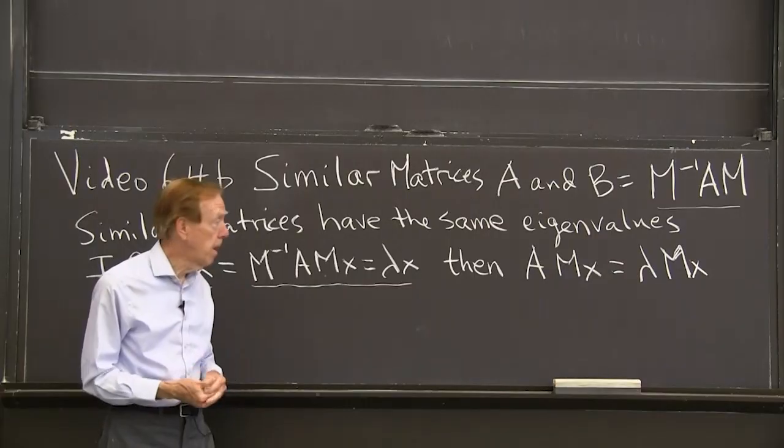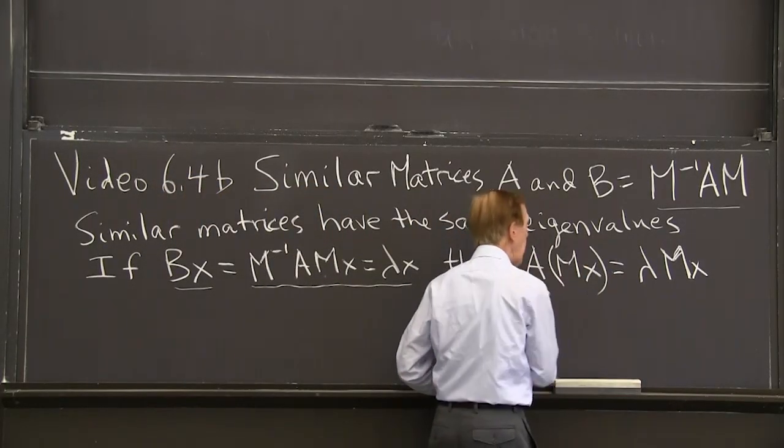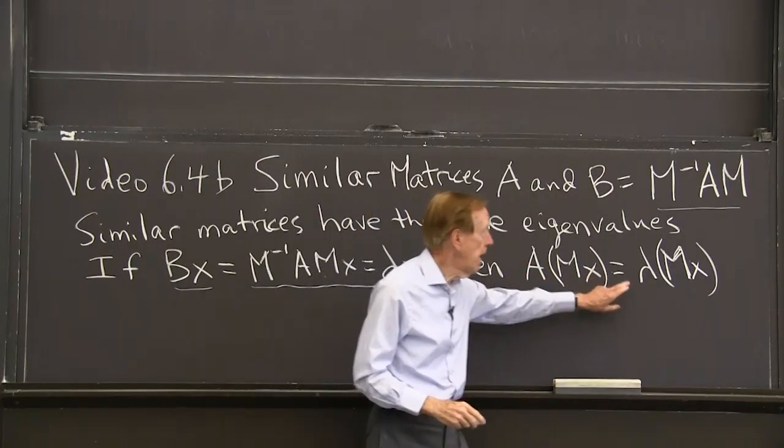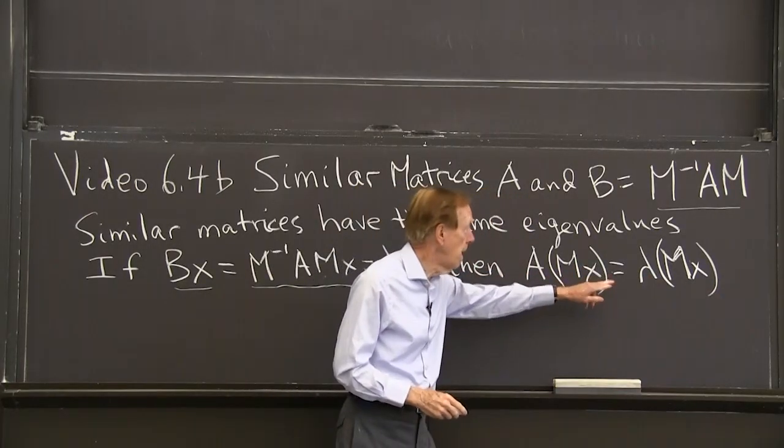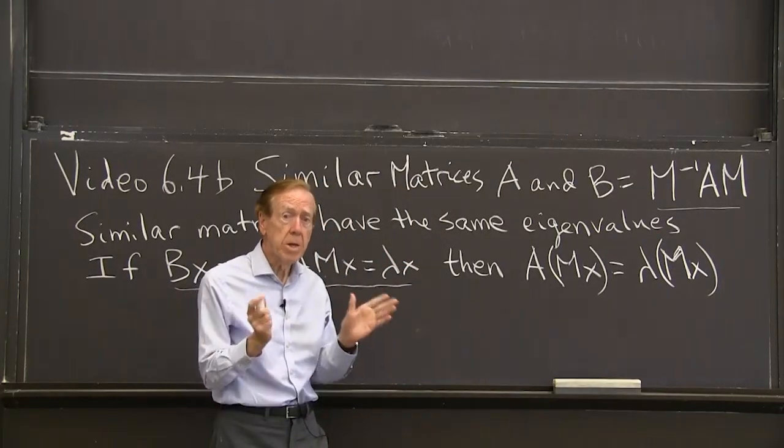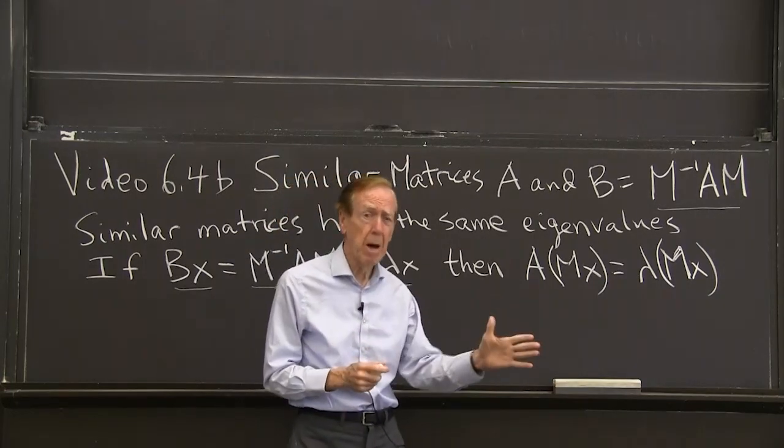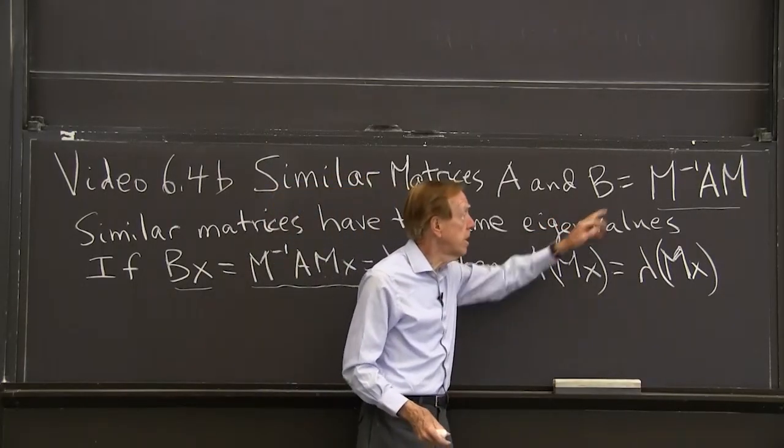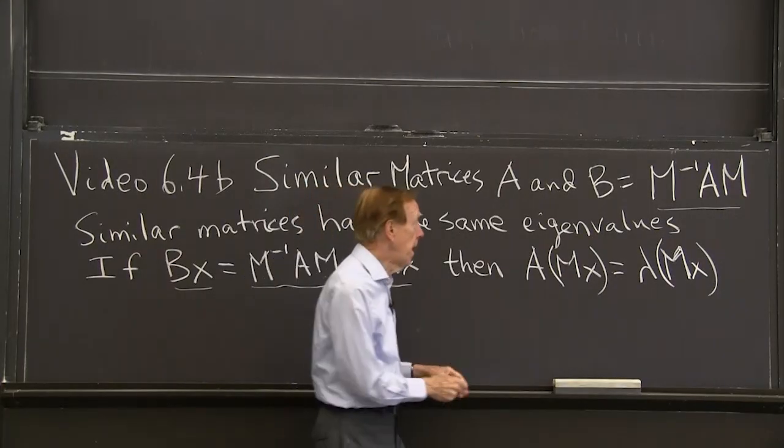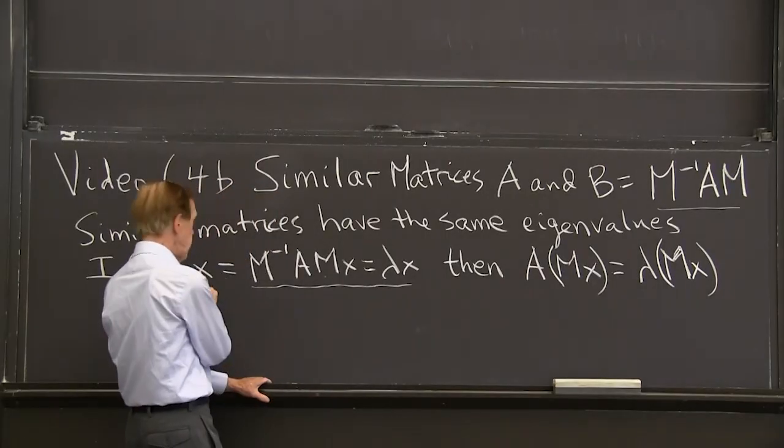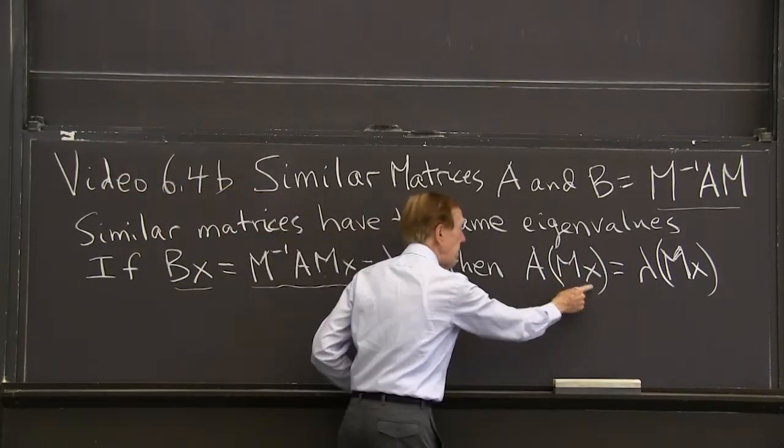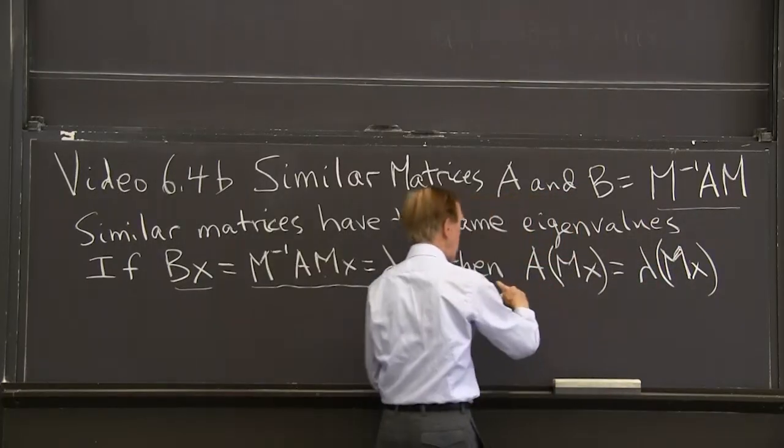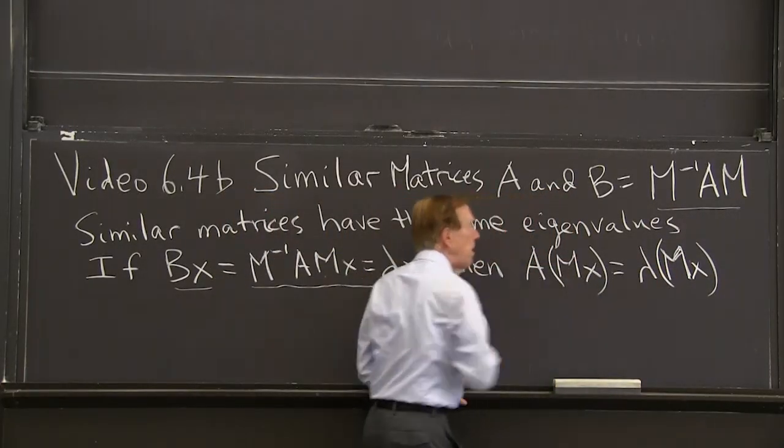But the M shows up on the right hand side. I have lambda MX. Now I just look at that and I say, yes. A has an eigenvector MX with eigenvalue lambda. Right? A times that vector is lambda times that vector. So lambda is an eigenvalue of A. It has a different eigenvector, of course, if matrices have the same eigenvalues and the same eigenvectors, that's the same matrix. But if I do this, allow an M matrix to get in there, that changes the eigenvectors. Here they were originally X for B. And now for A, they're M times X. It does not change the eigenvalues. Because of this, M on both sides allowed me to bring M over to the right hand side and make that work.